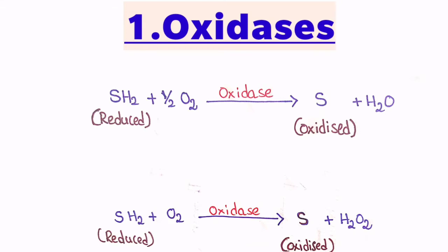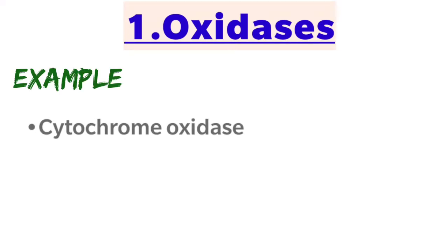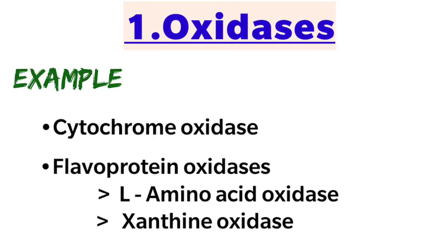So in this way, oxidases are responsible for the removal of hydrogens from the substrate, and those removed hydrogens are accepted by oxygen to form either water or hydrogen peroxide. Coming to the examples of oxidases: cytochrome oxidase and flavoprotein oxidases.